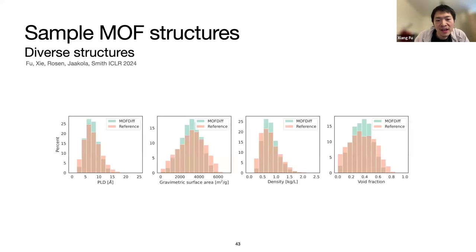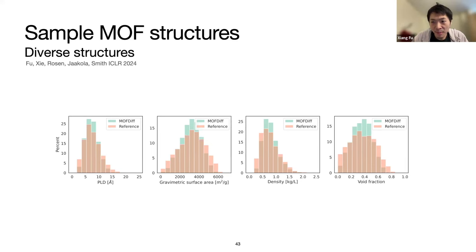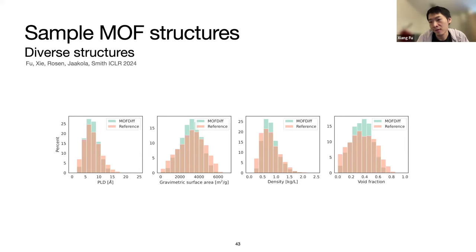We inspect the random generation of the model against the reference distribution for key MOF structural properties: pore-limiting diameter (the largest ball that fits inside the MOF), surface area, density, and void fraction. The model generates a wide spectrum of all these structural properties compared to the reference distribution, showing it can generate a diverse class of materials.